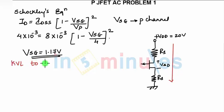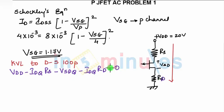It will be VDD minus IDQ into RS minus VSDQ, then minus IDQ into RD, this is drain resistance, equals to 0. So from this, what we will get? We know the value of VDD, we know the value of IDQ, VSDQ, and IDQ.